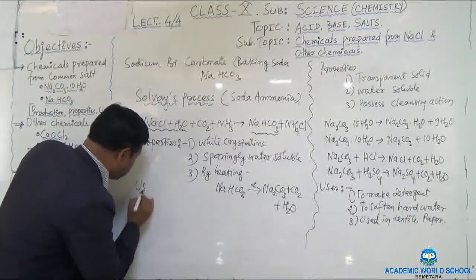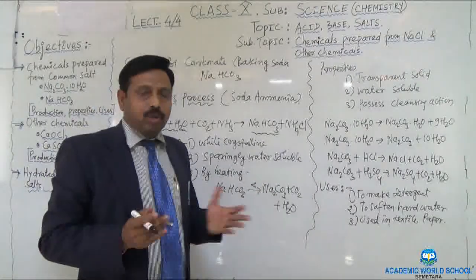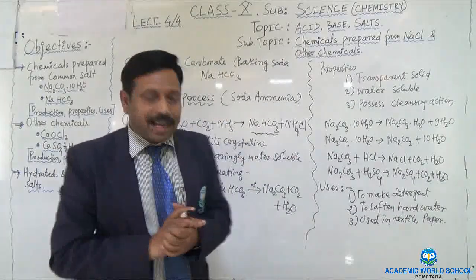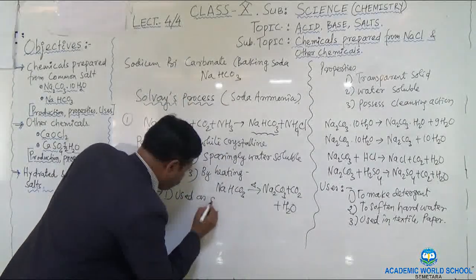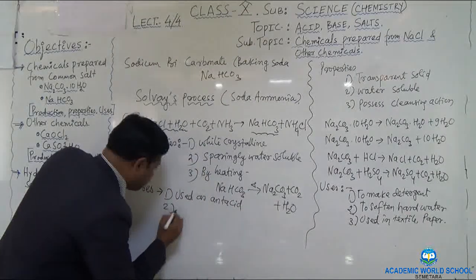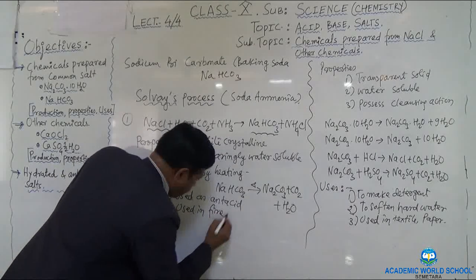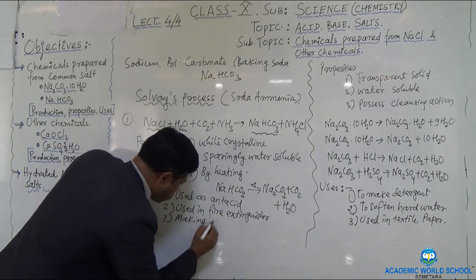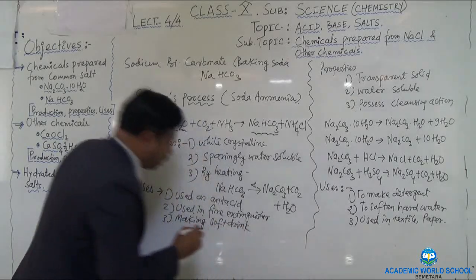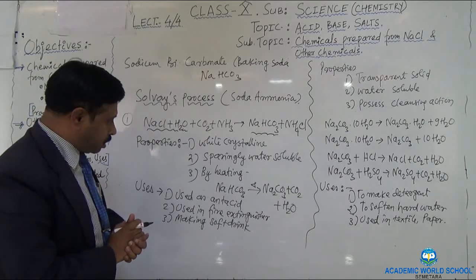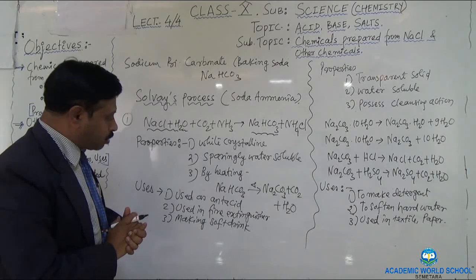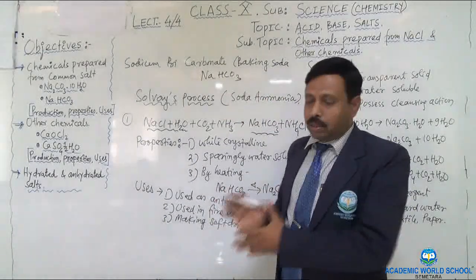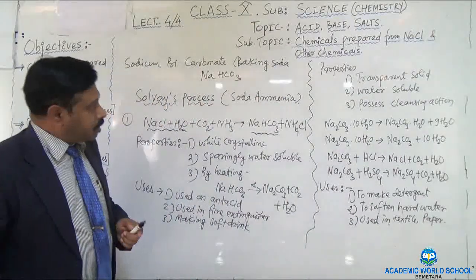The uses of baking soda: first, it is used as an antacid to get relief from acidity; second, it is used in fire extinguishers; third, it is also used in making soft drinks or cold drinks. These are the uses of sodium bicarbonate — antacid, fire extinguisher, and soft drinks.